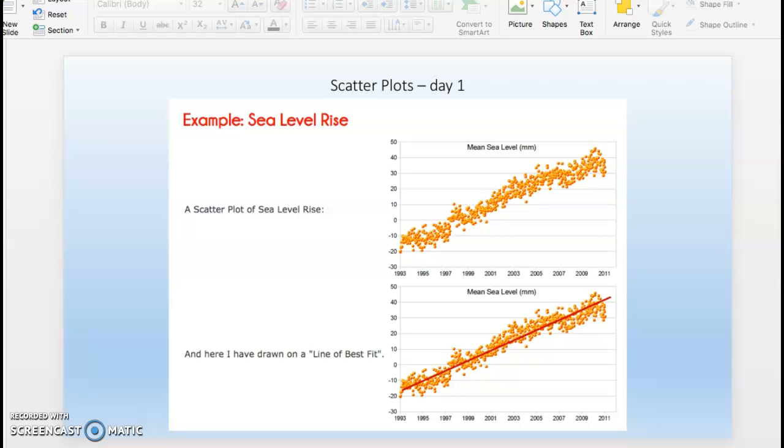You can see it keeps rising. This is because of global warming, anyway. This is the scatter plot, and then down here in red they draw a line of best fit. That's a lot of points right there.